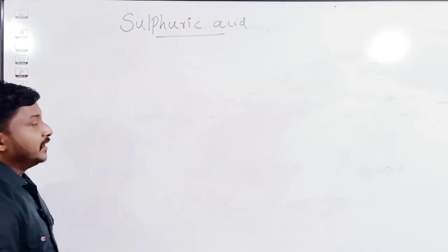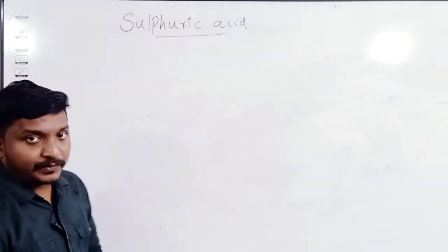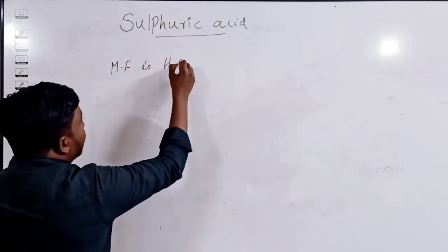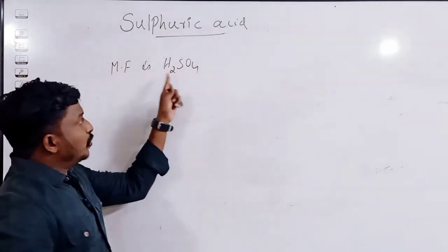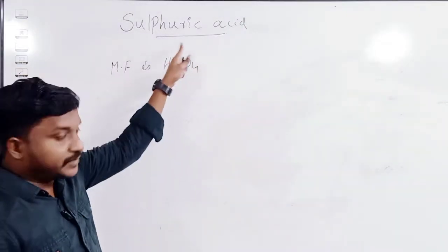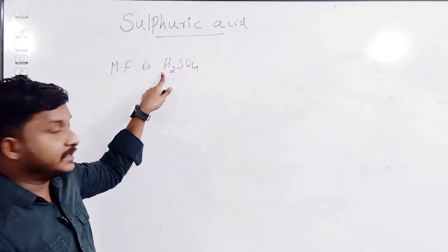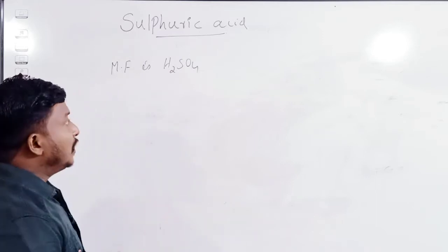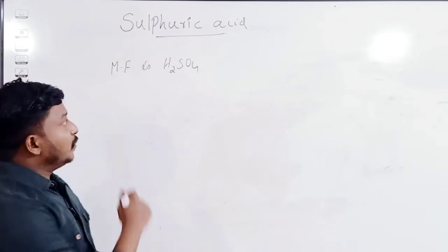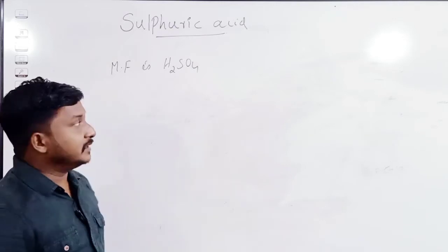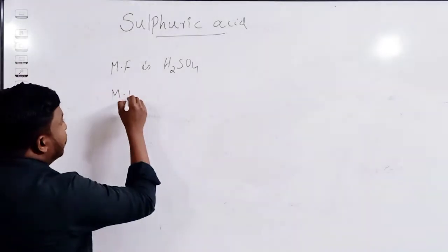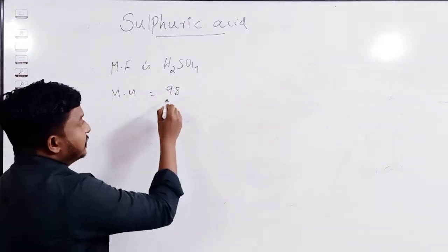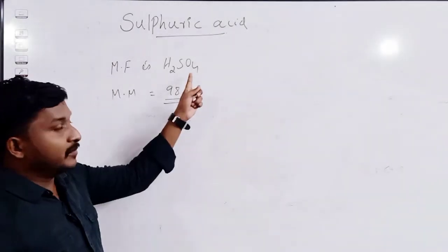First, we can see the molecular formula of sulfuric acid. The molecular formula of sulfuric acid is H₂SO₄. One molecule of sulfuric acid contains two atoms of hydrogen, one atom of sulfur, and four atoms of oxygen. We calculate molecular mass by adding the atomic mass of each element, and the molecular mass of sulfuric acid is equal to 98.